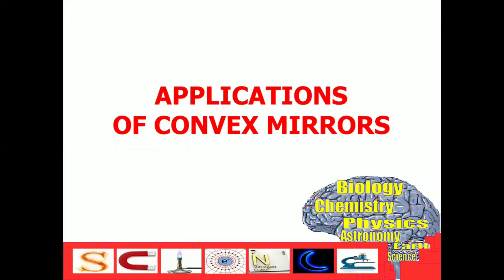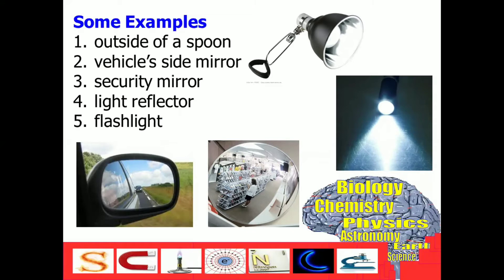What are the applications of a convex mirror? You have learned that the outside of a spoon is the best way to visualize what a convex mirror is. In terms of application, this is used in the following cases: vehicle side mirrors and security mirrors usually seen in convenience stores and department stores to check for thieves or anyone stealing products. Applying the characteristics of the convex mirror, it has a wider view since all images are smaller or reduced in size. That's why we can see a bigger picture or area behind the car or even at a place like a convenience store or department store.